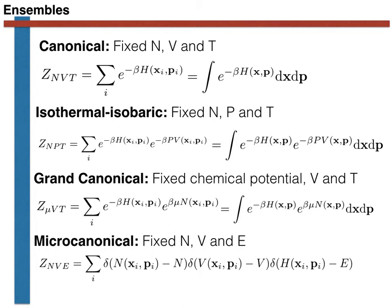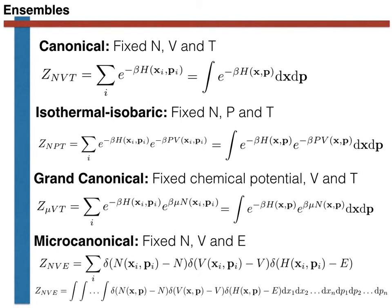Let's now consider how we would write the microcanonical partition function if the state space is continuous. We essentially calculate a multiple integral, integrating over every position and every momentum coordinate of the system — every degree of freedom. For a system of N atoms, this is a 6N-dimensional integral over 3 position and 3 momentum coordinates for each atom. Inside this integral we have delta functions, so only those microstates that have energy E, number of atoms N, and volume V make any contribution to the final value of the partition function.